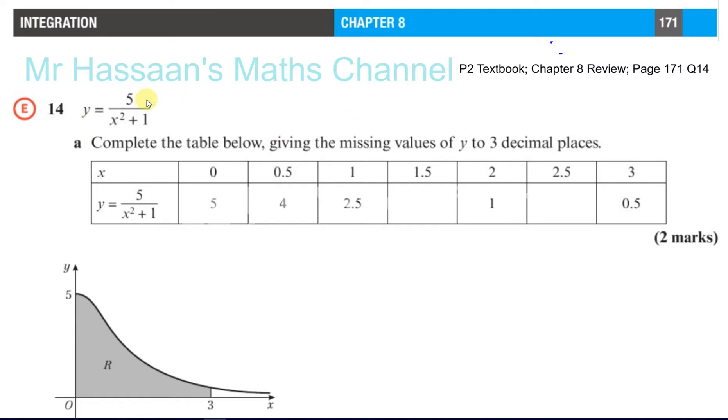Anyway, so we have y equals 5 over x squared plus 1, so first we've got to use the Trapezium Rule to find the missing value of y to three decimal places, because right now you don't know how to integrate something like this, at the stage that we got to. So we can't find the area between 0 and 3 under this curve by using integration, because we don't know how to integrate this right now. So we have to use a way to approximate it, which is by using the Trapezium Rule.